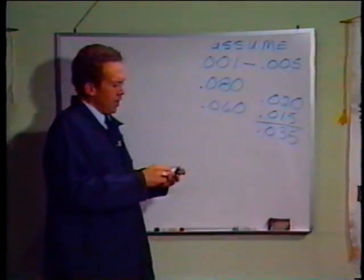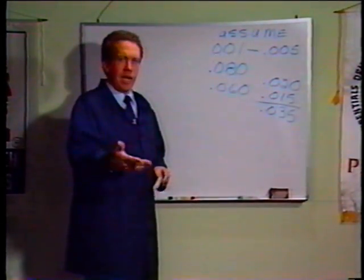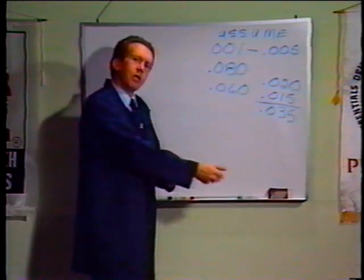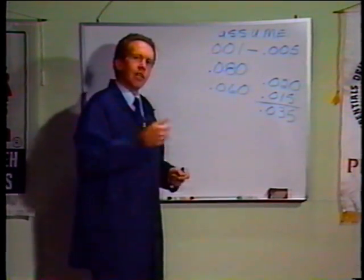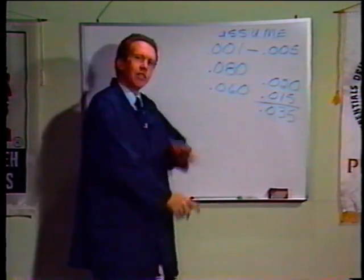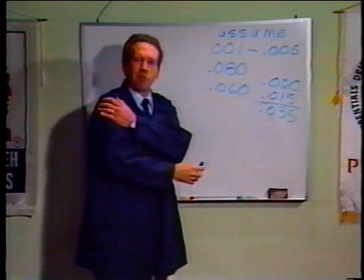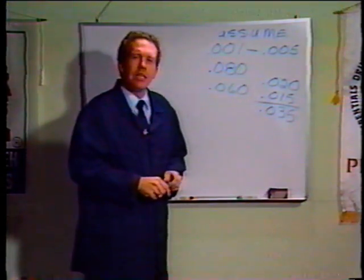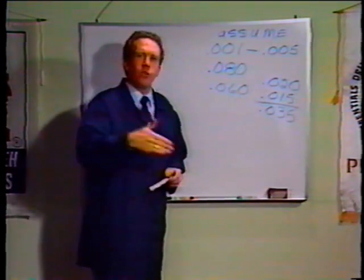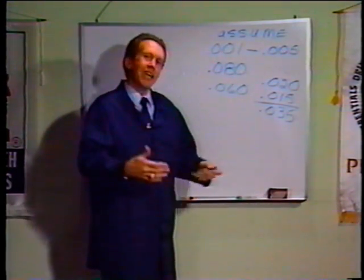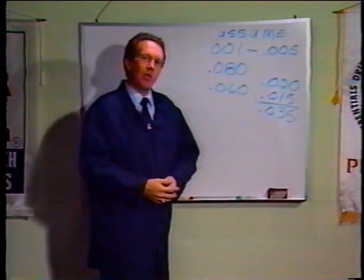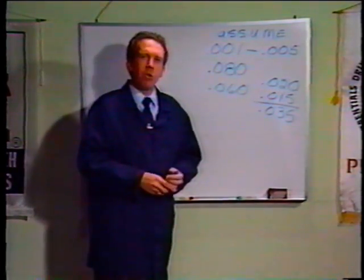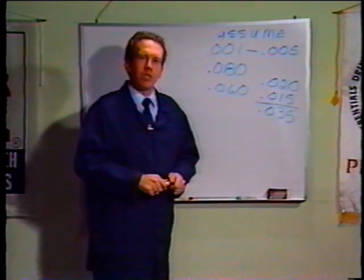If that 35 thousandths is advanced, that's the engine that when you pull the recoil it kicks back and jerks your arm out of its socket. Or if that 35 thousandths is retarded, that engine starts great but it just doesn't have the power that it should when it's running.